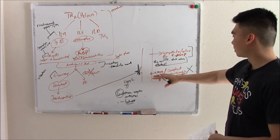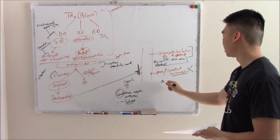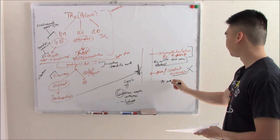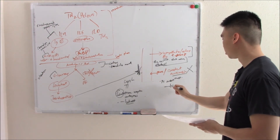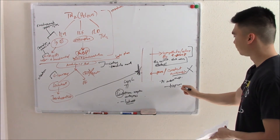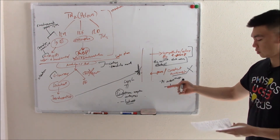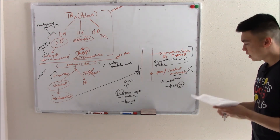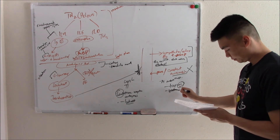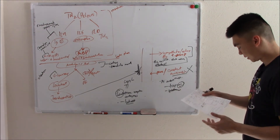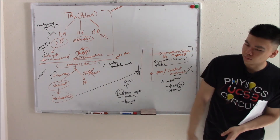We also give muscarinic antagonists to block constriction. All these drugs end in '-tropium' — the M stands for muscarinic antagonists. The short-acting one is called ipratropium.